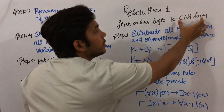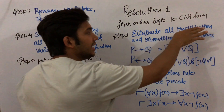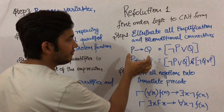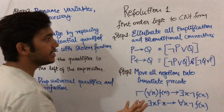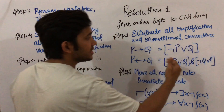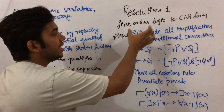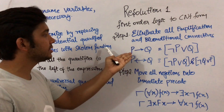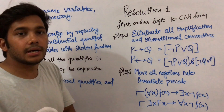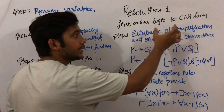Basically, for converting first-order logic to CNF form, there are six steps involved. The first step is to eliminate all implication and biconditional connectives. Suppose there is any given clause and in that clause we have either implication or biconditional, then we need to remove these and convert them into CNF form. Here P and Q are two given predicate logic statements — for example, P can be 'if it rains I will become happy', and Q is another clause.